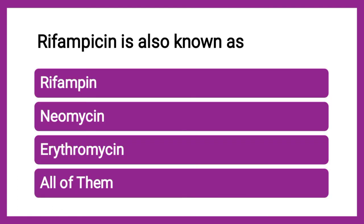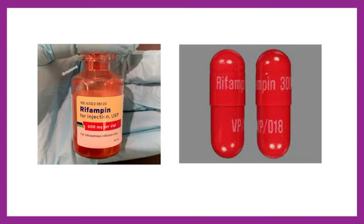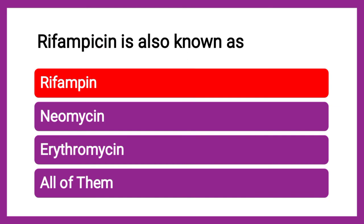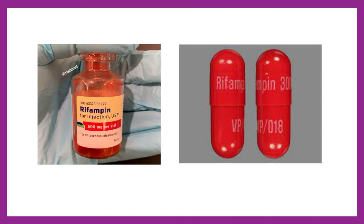Next question: Rifampicin is also known as — rifampin, neomycin, erythromycin, or all. The correct answer is rifampin. Rifampicin is also known as rifampin, available in injectable and capsule forms. Rifampin is nothing but rifampicin.